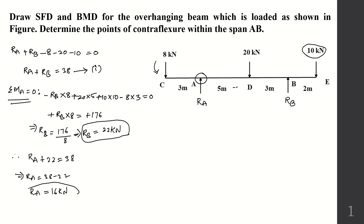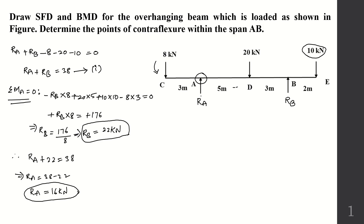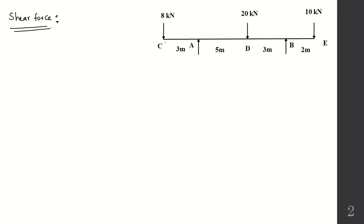Once the reactions are calculated, we move on to the shear force calculations. The shear force at C: standing at point C, there is 8 kN acting downward to the left. Using the sign convention — Left side Upward is positive (LUP), Right side Upward is Negative (RUN) — since it is downward, the shear force at C = −8 kN.